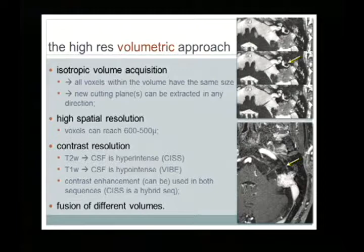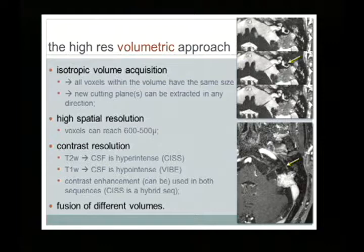Using sequences originally developed for cisternography, the use of contrast agent helps identify vessels and structures. In this endolymphatic sac tumor, the same anatomy can be displayed: CSF is bright, the nerve is black and can be identified, and the tumor will enhance after contrast agent administration, even on this cisternographic approach.